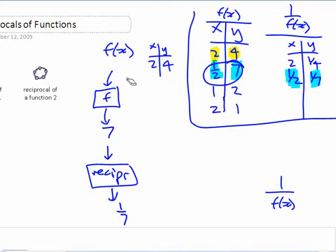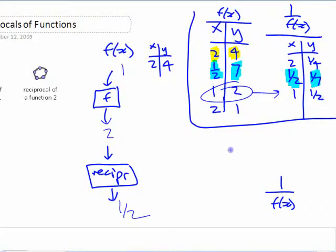If we start with a 1, what do we end up with here? A 1 gives us a 2, and then that turns into a half. So 1, 2 becomes the point 1, 1 half, changing the y values.